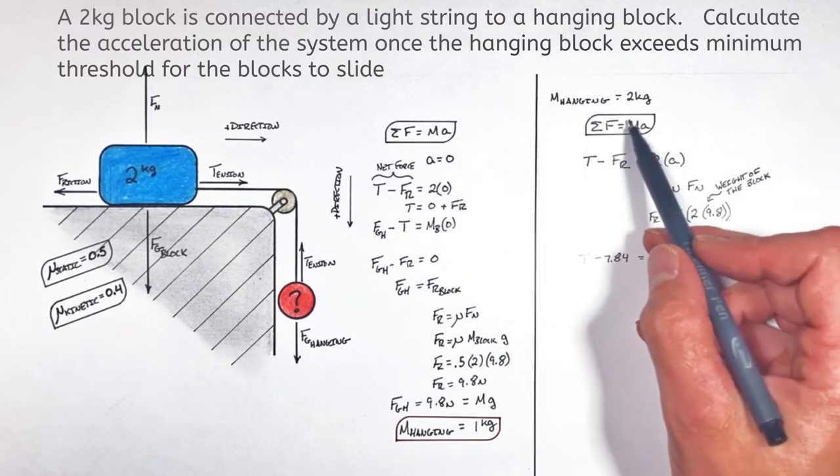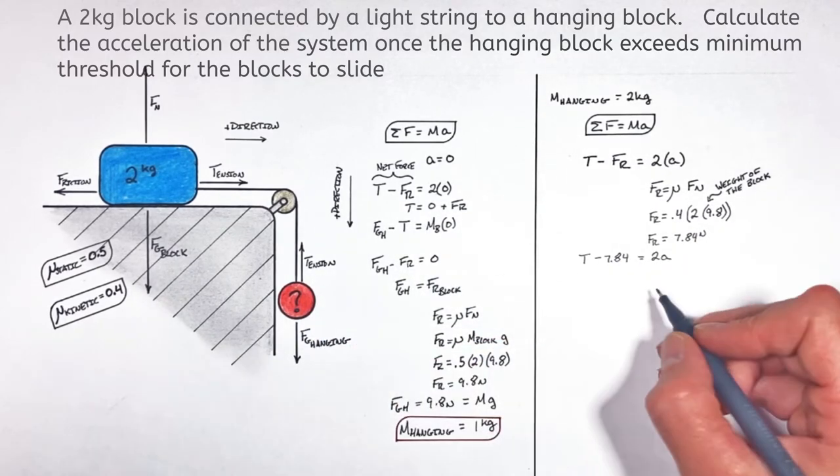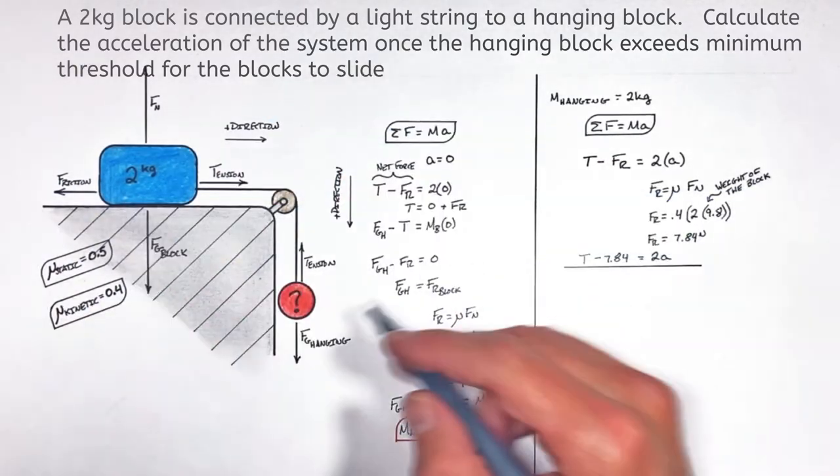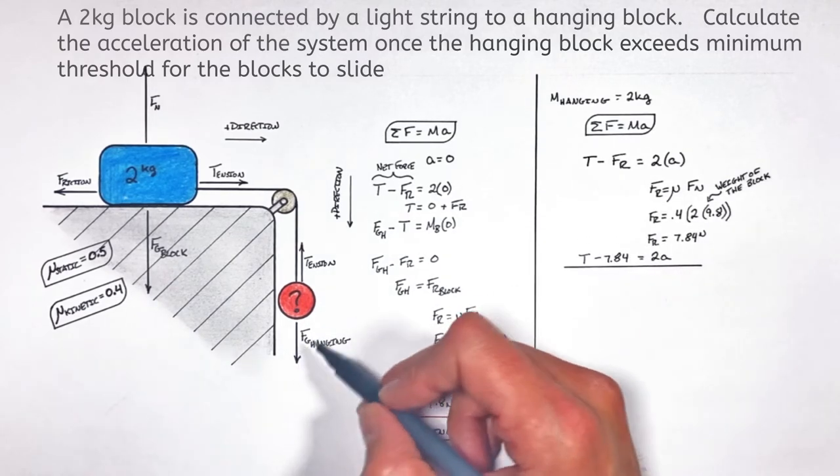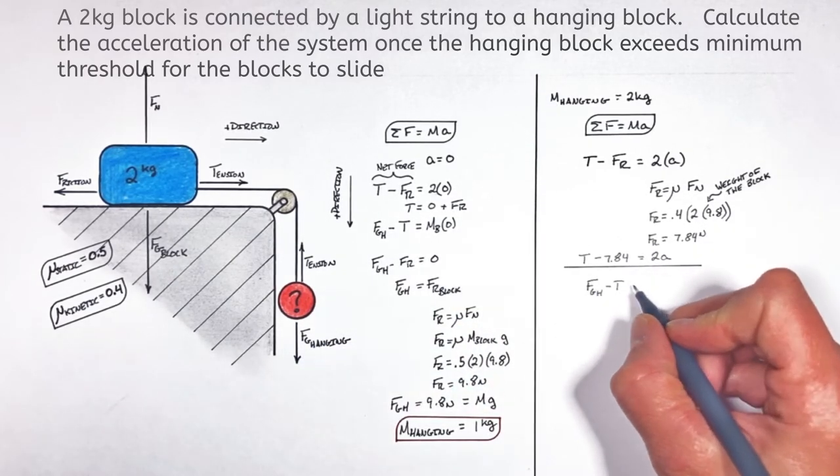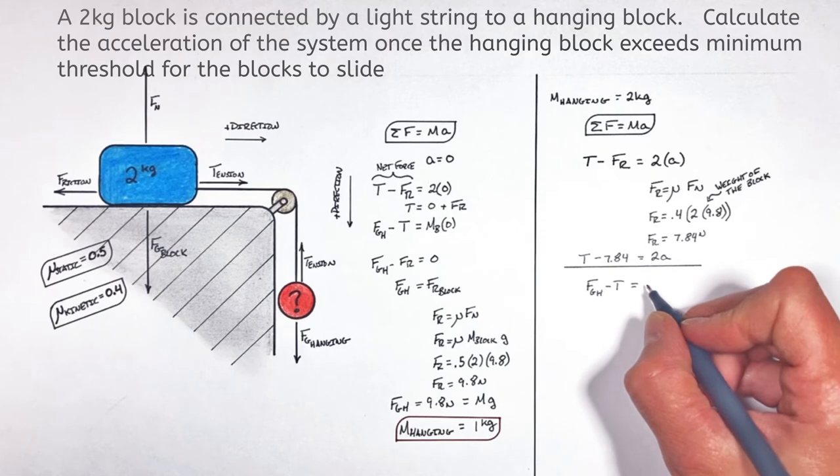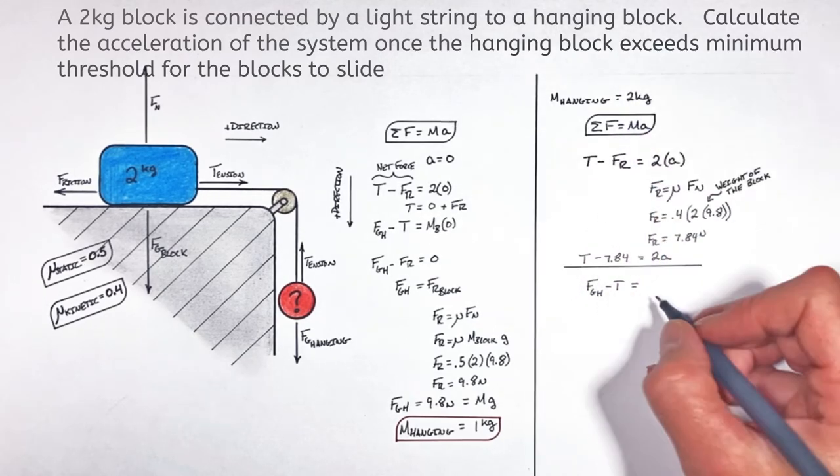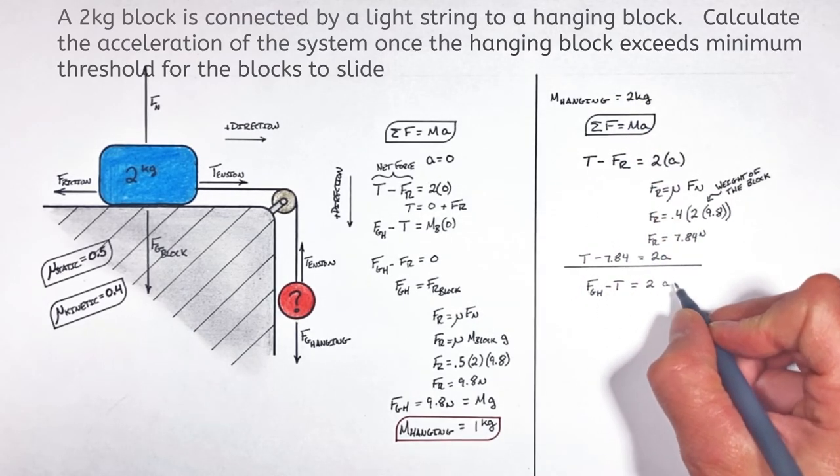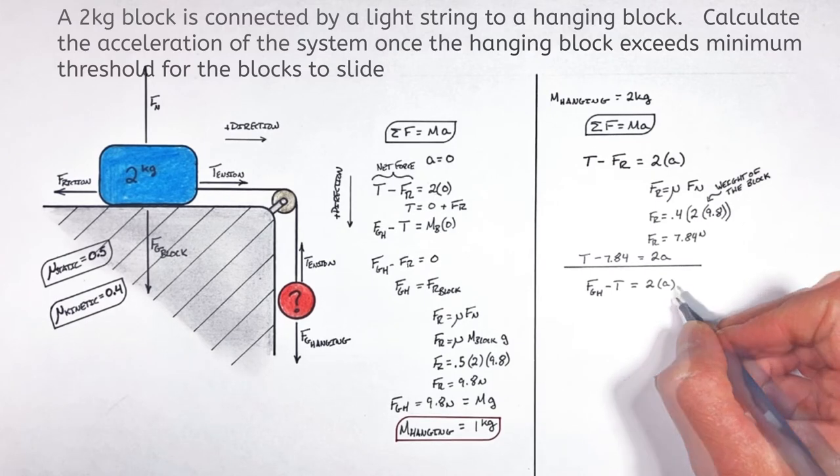So let's apply Newton's second law to this hanging block here in order to solve for a. You see for our hanging block, there's the weight of the hanging block minus the tension in the string, and that's going to equal the mass of our hanging block, which again is two kilograms, multiplied by the acceleration.